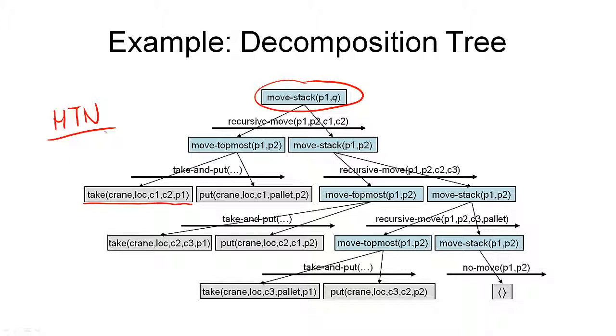Hopefully you will understand that the power of HTN planning largely comes from the fact that it handles constraints on world states explicitly. And since there are many different types of constraints that can be handled, HTN planners can be adapted to specific applications.